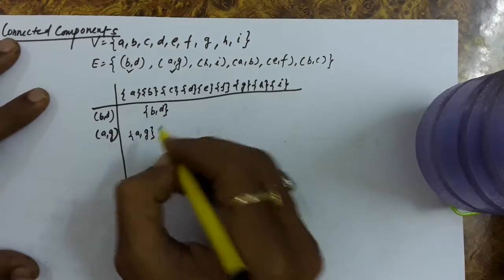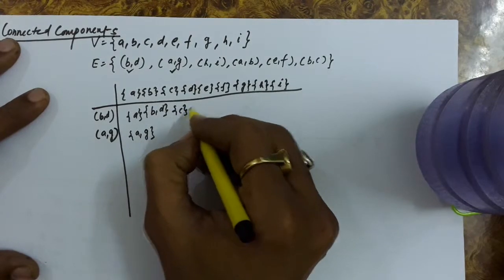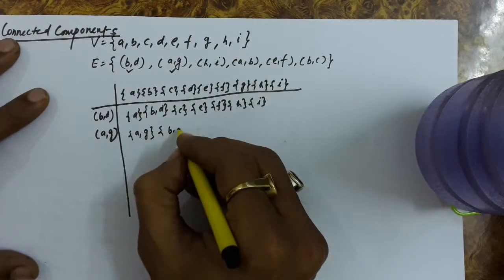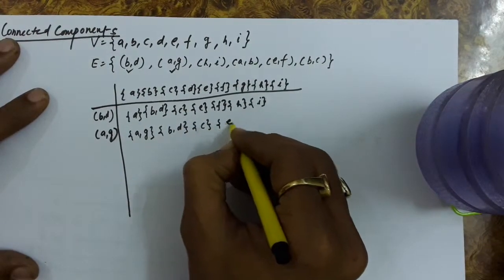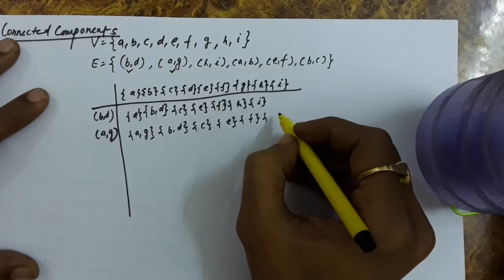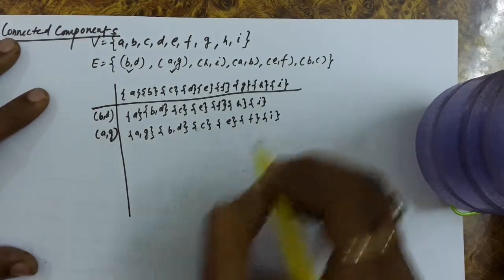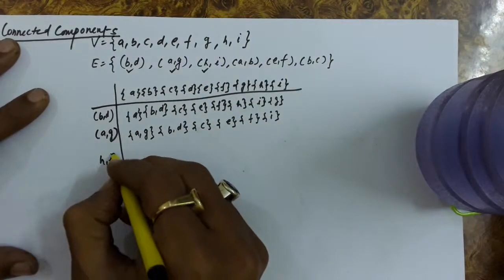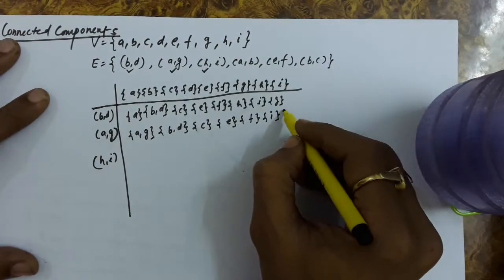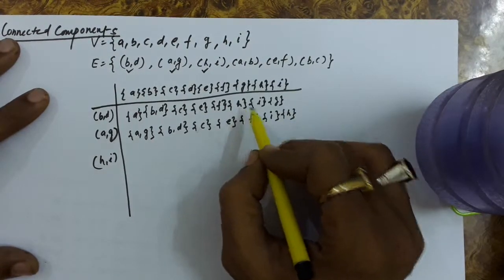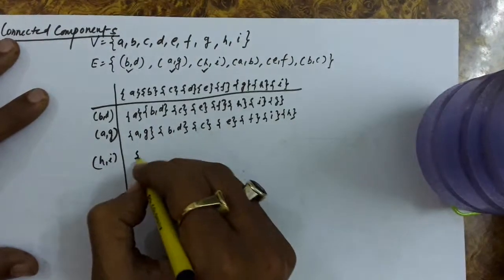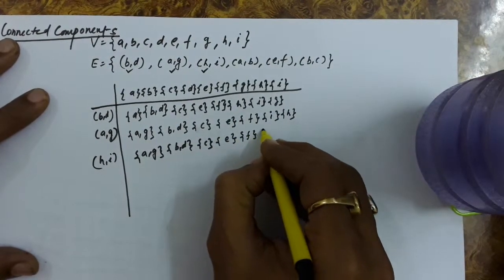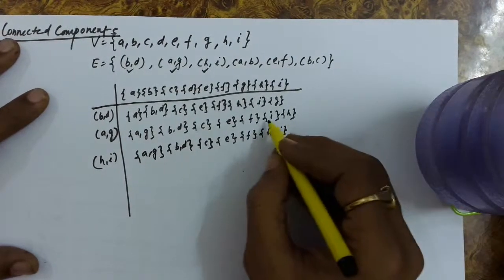When we are uniting the sets, the original sets are deleted or destroyed. We then process the H-I edge: H is in a different set and I is in a different set, so we unite these two sets. Now we have sets: A, G, B-D, C, E, F, and H-I. When making a union, the original sets H and I are deleted.